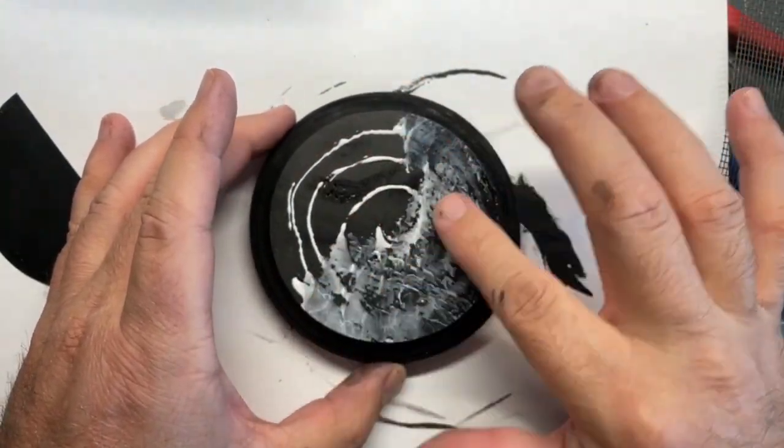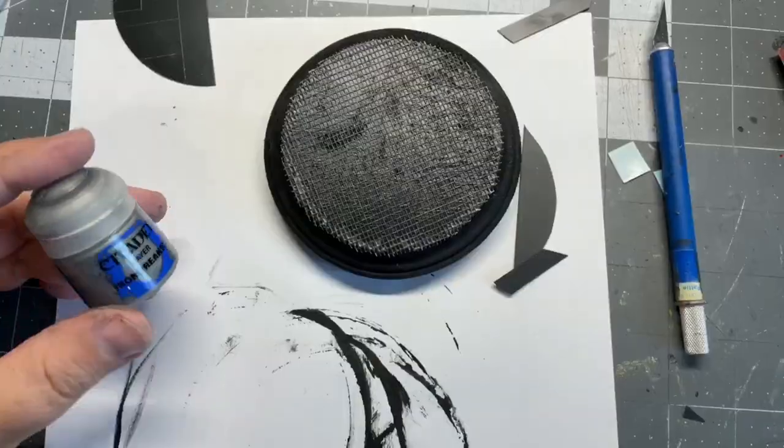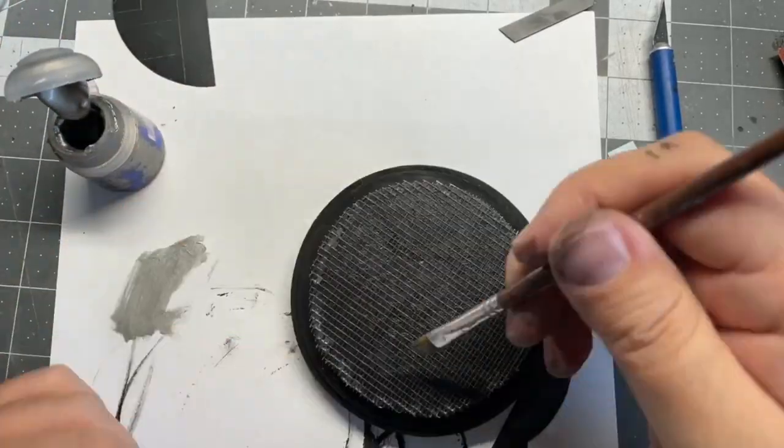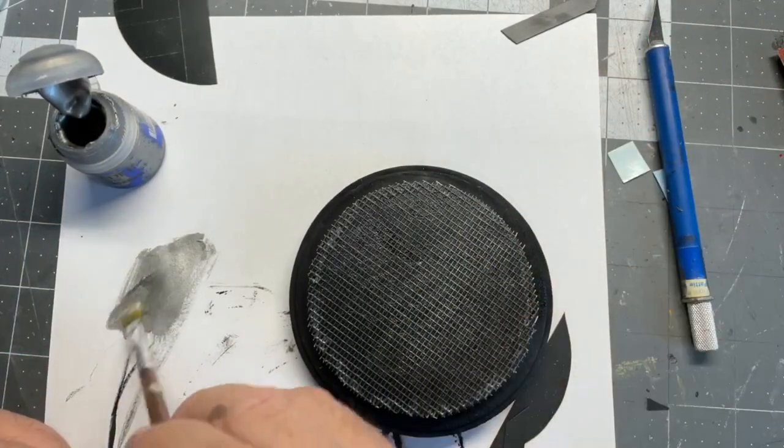And kind of smear it around with my finger. This stuff dries really fast and it's pretty great. And I'm just gluing that screen down. And then I took this Citadel silver and I'm just dry brushing it. I don't know if it shows up super right here, but it looks pretty cool. It looks like a metal grate.